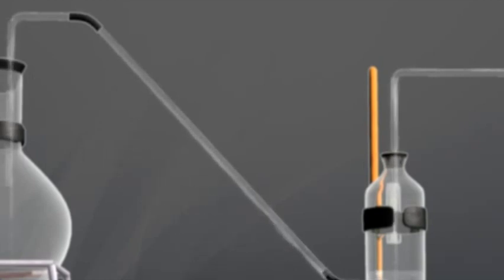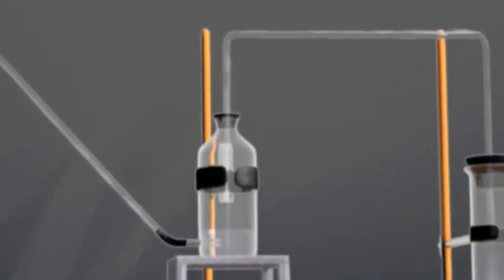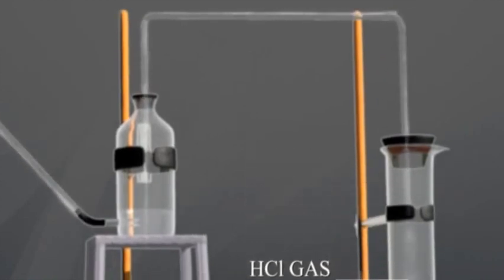Now this dry HCl gas is collected by upward displacement of air in the jar, since it is 1.27 times as heavy as air and is very soluble in water.